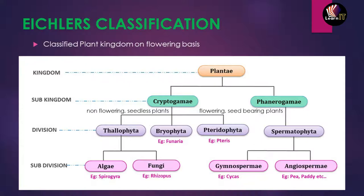Cryptogamae is further divided into three divisions. The first is Thallophyta, where the plant body is thallus-like — undifferentiated. The second is Bryophyta, where the plant body has root-like and stem-like structures but vascular tissues are absent. The third is Pteridophyta, where the plant body is differentiated into true roots, stems, and leaves, and vascular tissues are present — so they are also called vascular cryptogames.